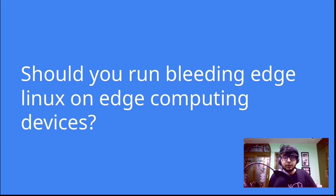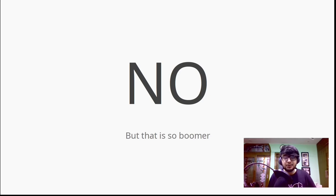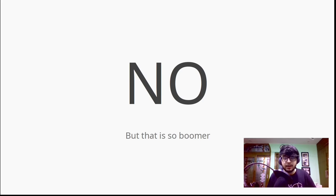At ArchConf, I want to talk about whether you should run bleeding edge Linux on edge computing devices. You could guess the answer — if it were no, I wouldn't be giving this talk. The answer is so last generation, because this generation has clustering technologies such as Docker Swarm and Kubernetes. One might argue Kubernetes is very heavy and might not run efficiently on edge devices, but the Kubernetes team realized that, and alternatives such as K3S allow Kubernetes to run on edge computing devices. You can link five or six Raspberry Pis into a Kubernetes cluster with a bastion host VM to push updates.